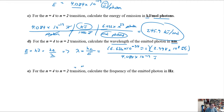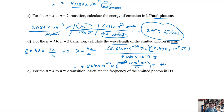To convert to nanometers: there are 1 × 10⁹ nm per meter — nano is really really small so there are a lot of them. Multiplying 4.864 × 10⁻⁷ m by 10⁹ nm/m gives 486.4 nm. That makes sense — that's approximately blue-green light, so we're in the right ballpark. Right in the visible spectrum.